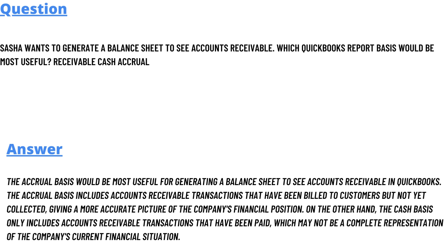The accrual basis would be the most useful for generating a balance sheet to see accounts receivable in QuickBooks. The accrual basis includes accounts receivable transactions that have been billed to customers but not yet collected, giving a more accurate picture of the company's financial position. On the other hand, the cash basis only includes accounts receivable transactions that have been paid, which may not be a complete representation of the company's current financial situation.